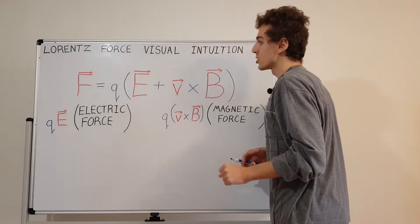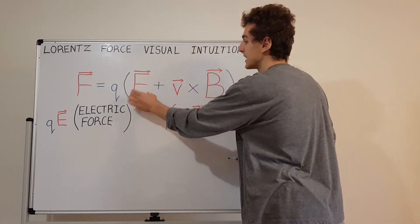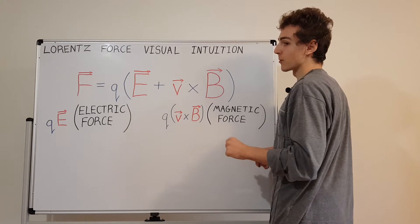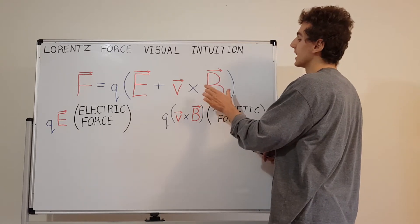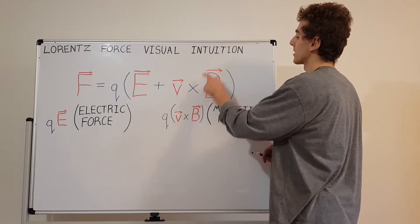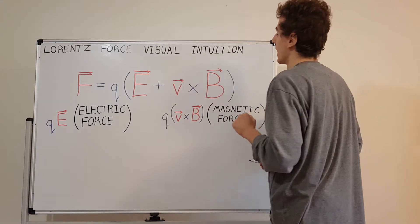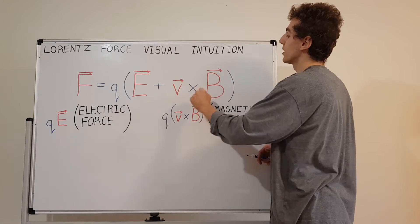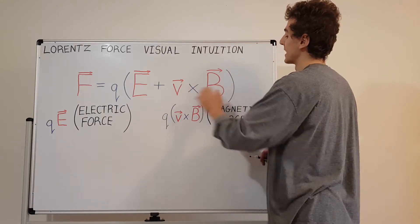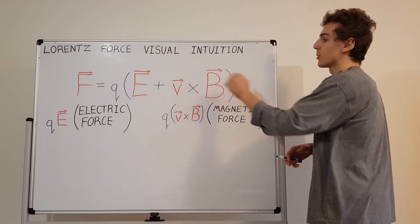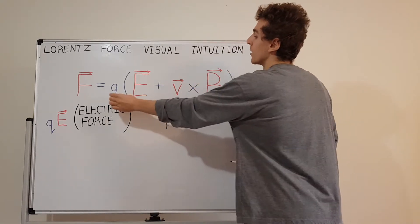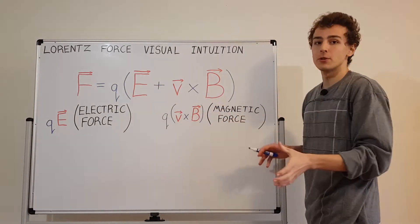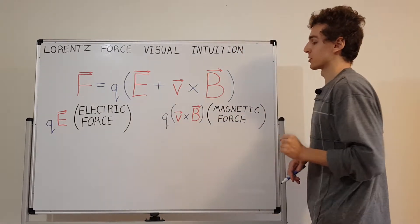Q denotes the charge, which is a scalar value. E denotes the electric field, that's a vector value. V is the velocity, also a vector value. And B is the B field, which is the magnetic field, also a vector value. The velocity and B field vectors are taken together with a cross product to make the magnetic force term. You can distribute the charge to both terms, giving you two separate terms: the electric force term and the magnetic force term.